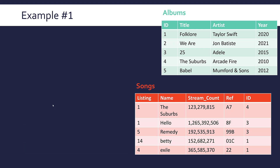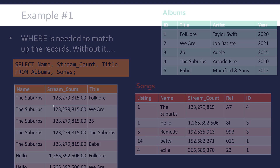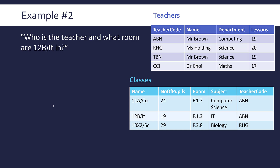So WHERE albums.id equals songs.id is important. Let's look at another example with a tiny bit more complexity. We've got teachers and we've got classes as two separate tables. Primary key in teachers is teacher code, and name is our primary key in classes. Teacher code is our foreign key in classes - not always at the end, I just happen to have it there in my examples.